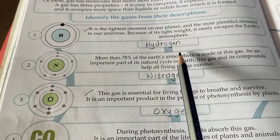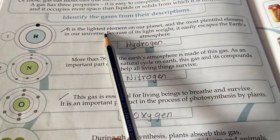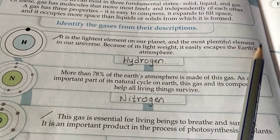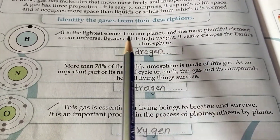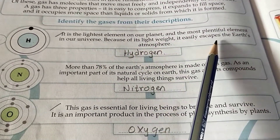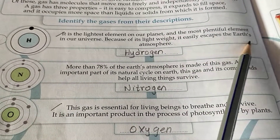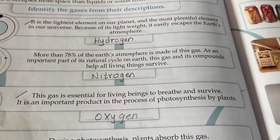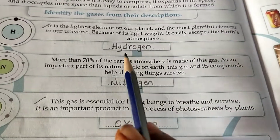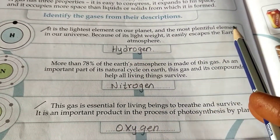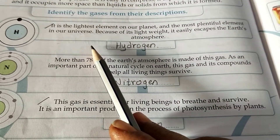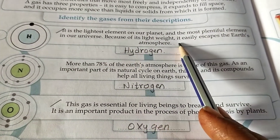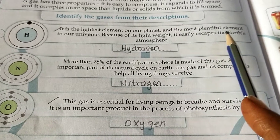H — H for Hydrogen. It is the lightest element on our planet and the most plentiful element in our universe. Because of its light weight, it easily escapes the Earth's atmosphere. Hydrogen सबसे light होता है, इसलिए यह plentiful element in our universe — पूरे दुनिया में यह बहुत ज़्यादा है. इसका weight भी बहुत कम है और यह जल्दी से move होता है.